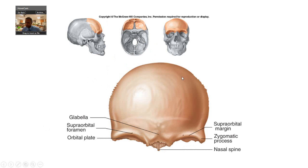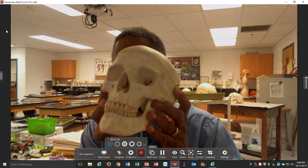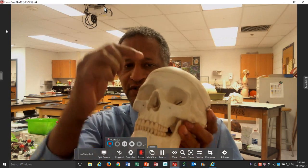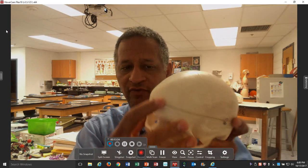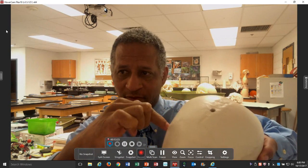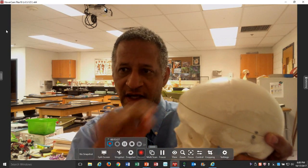Frontal bone — notice when you look at the anterior view, this is a lateral view, this is a superior view, and again an anterior view. So we're taking that skull and rotating it. We look at a frontal view — just this bone. Pull the cap off, we're looking deep inside, and then we're kind of looking at the side.